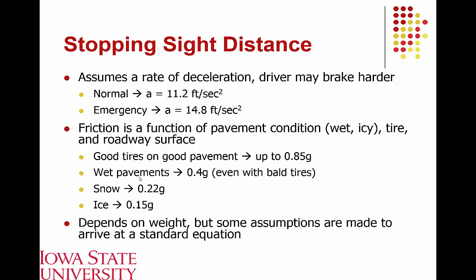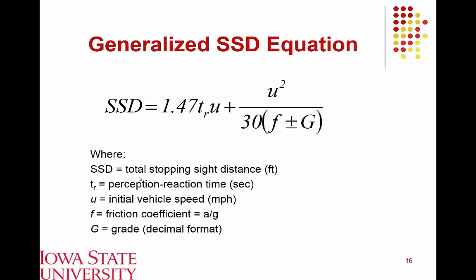The general equation for stopping sight distance is: SSD = 1.47 × T_r × V + V² / (30 × (f ± G)), where the first term is the reaction distance (reaction time T_r in seconds times initial speed V in mph) and the second term is the kinematic braking portion. This equation can be applied to determine SSD for given conditions, back-calculate initial or final speeds leading up to a collision, or evaluate changes to design constraints such as reaction time or surface conditions.